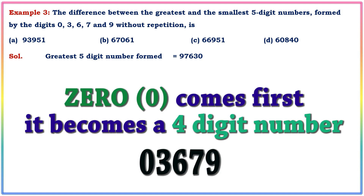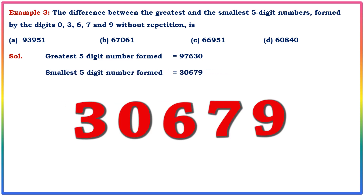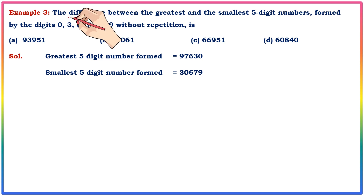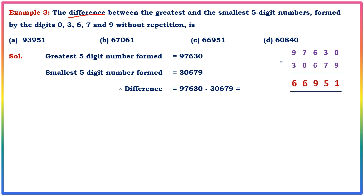The greatest five-digit number using 0, 3, 6, 7, 9 is 97630 and the smallest is 30679. Subtracting: 97630 minus 30679 equals 66,951. The answer is option C.